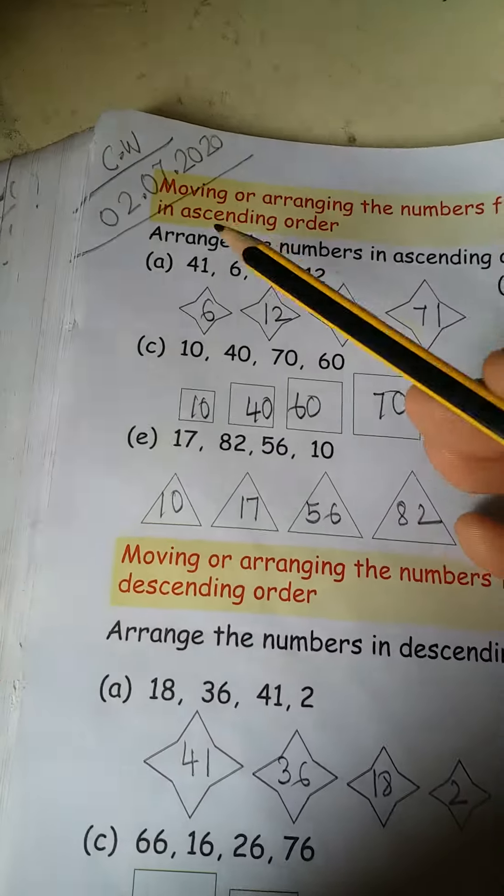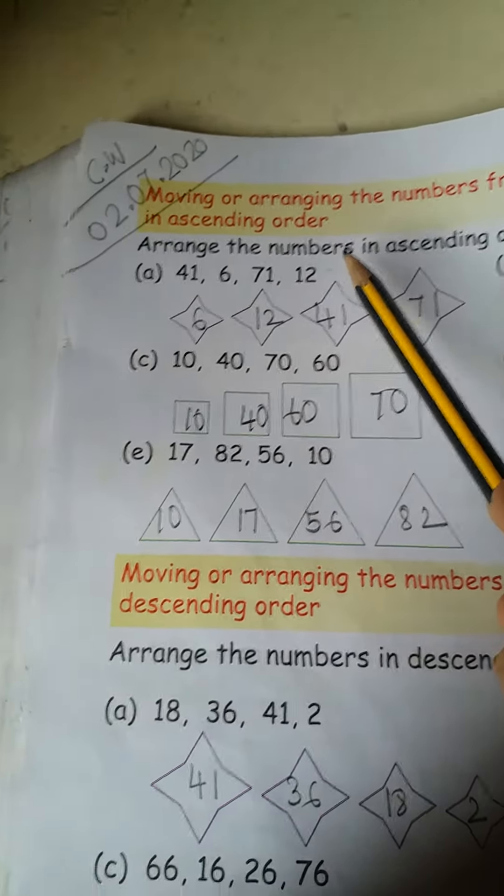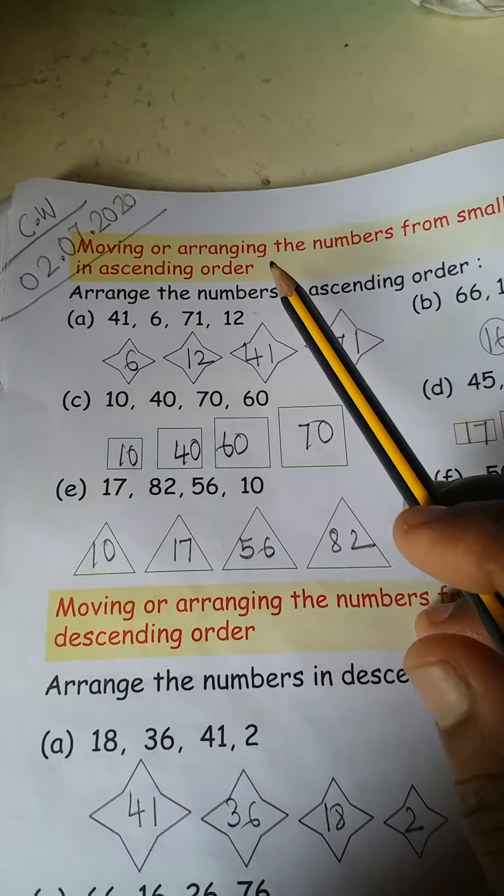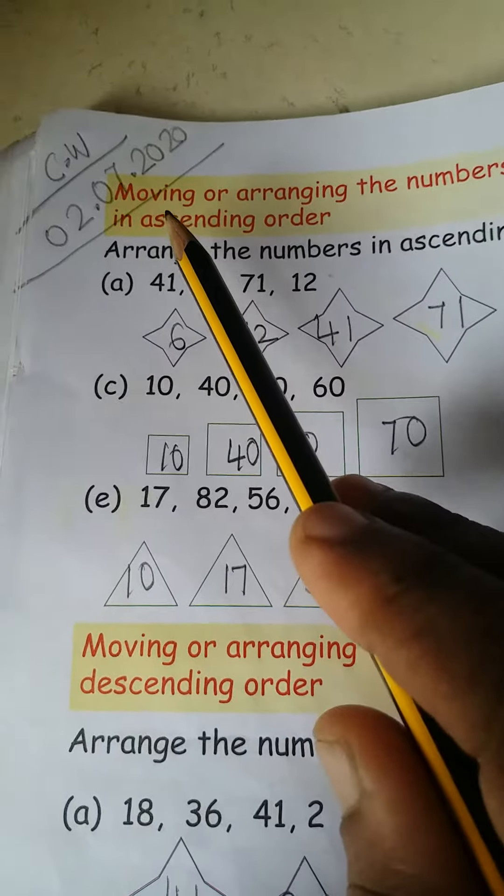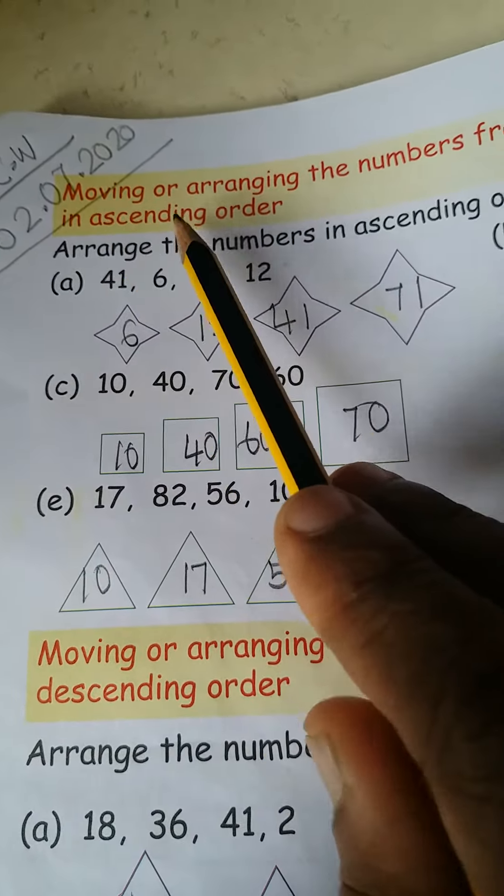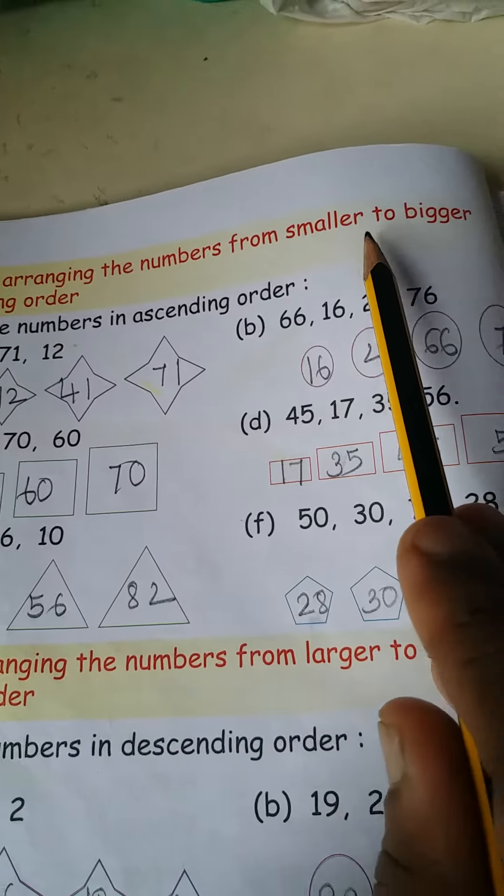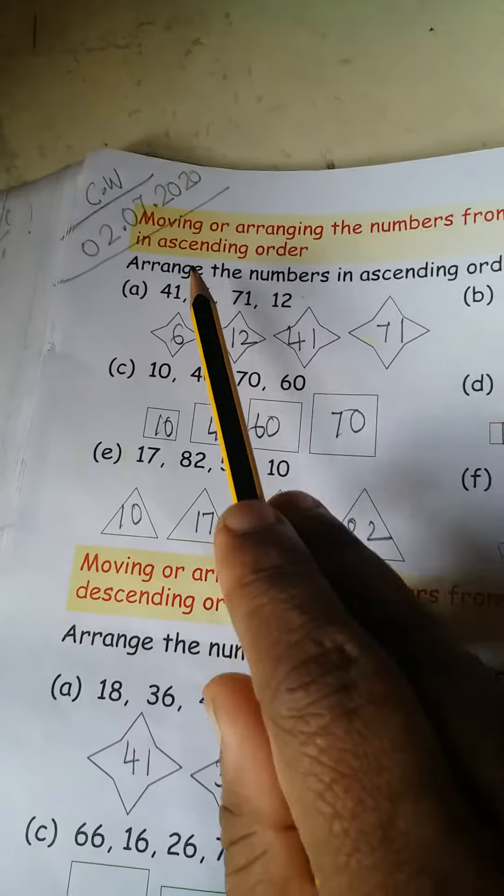And please write here today's date NCW. What is written here? Can you read with me? Put your finger under the line one by one. Moving or arranging the numbers from smaller to bigger in ascending order.